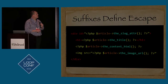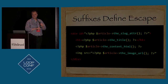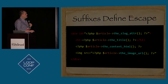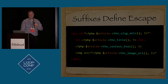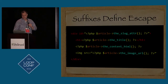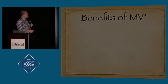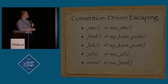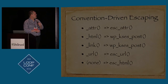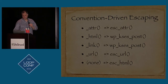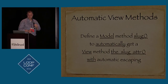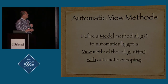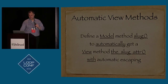Instead of using escape_attr, escape_url, escape_html, and the WP_kses functions directly, we use a convention-based approach where the method is your render method, and then attr, title, html, or url indicate your escapes. Here's a quick chart: link and html both go through kses_post, attr goes through escape_attr, and if you don't have anything specified we do an escape_html. You define a model with a method slug, and it automatically gets a view method called the slug_attr with automatic escaping.